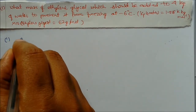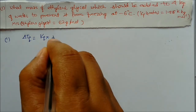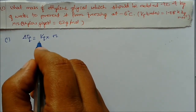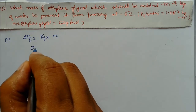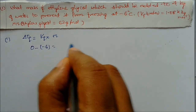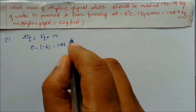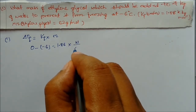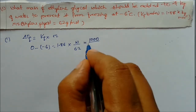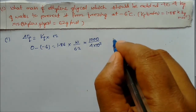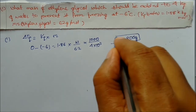Use the formula: delta Tf = Kf × molality. Kf is 1.86, delta Tf is 0 minus (minus 6) = 6. Molality equals weight divided by molar mass (62) multiplied by 1000, divided by 4 kilograms (which is 4 × 10³ grams of water). Solving for w, the weight of ethylene glycol equals 800 grams. This is our answer.